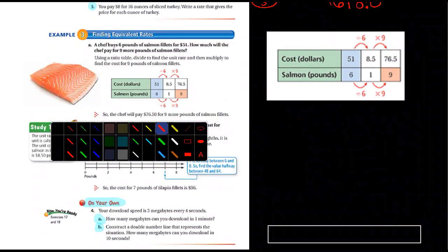A chef buys six pounds of salmon for $51, and they ask the question. This is an example to give you the answer here. How much will the chef pay for nine more pounds of salmon? The first thing you have to figure out is the unit rate. So you would simply divide 51 by six, and then you're going to get the unit rate. It's $8.5 per pound.